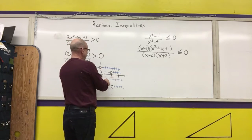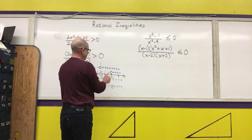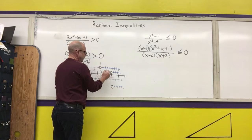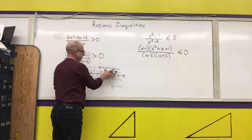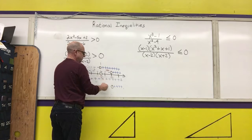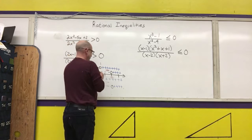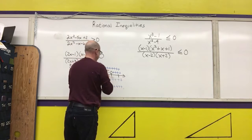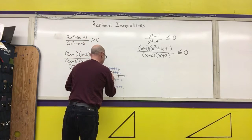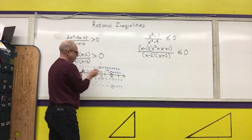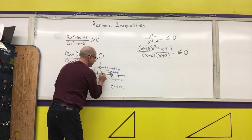The next region is between one-half and two. Positive times negative is negative; positive times negative is negative; negative over negative is positive. So I have to shade in everything between one-half and two.